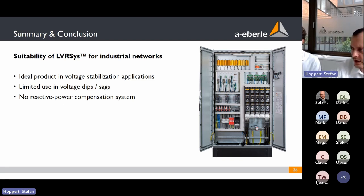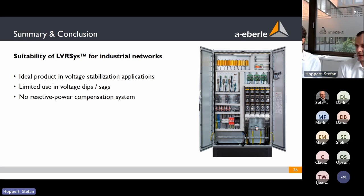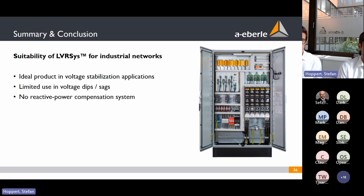Q&A: How long does it take to normalize voltage if the voltage dip is 40 percent? With a 20 percent boost system: if the dip is 40 percent, the remaining voltage is 60 percent. Boosting 60 percent by 20 percent gives 72 percent — we cannot restore it to nominal. The voltage remains at 72 percent until the dip naturally ends, as we have no energy buffer to compensate such deep dips.